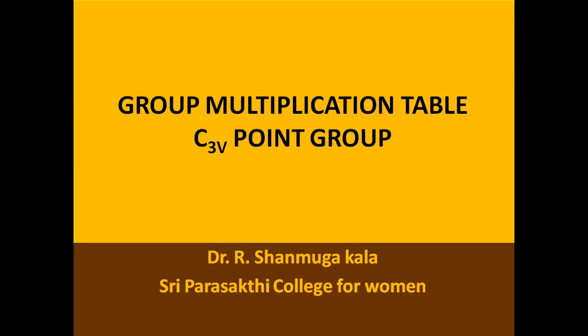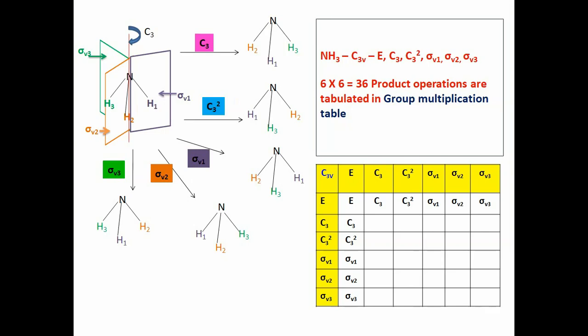Hello everyone. Today we will see the construction of a group multiplication table for the C3V point group. Let us take ammonia molecule as an example which has the point group C3V. The symmetry operations of this point group are identity, C3, C3², sigma V1, sigma V2, and sigma V3. The number of symmetry operations of this point group are 6, hence the product of all these 6 symmetry operations will produce 36 product operations which are going to be tabulated in a group multiplication table.